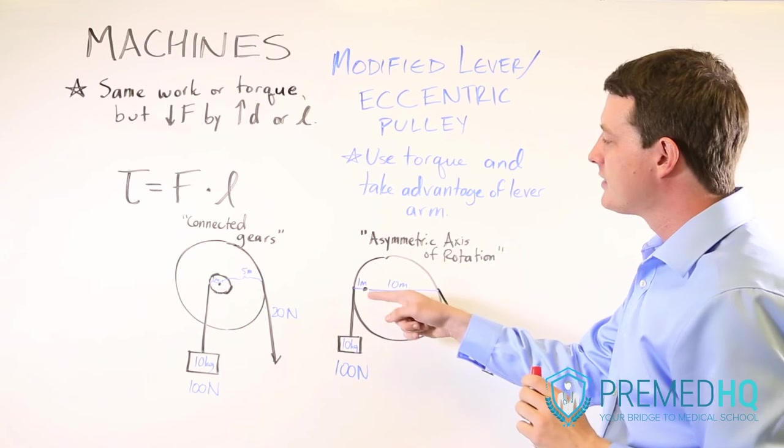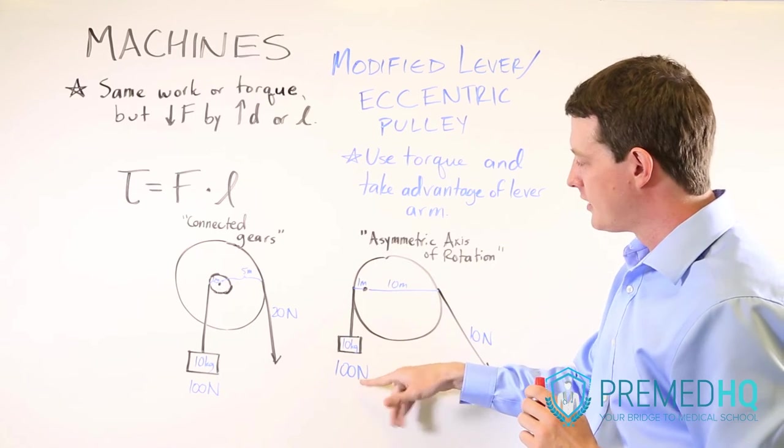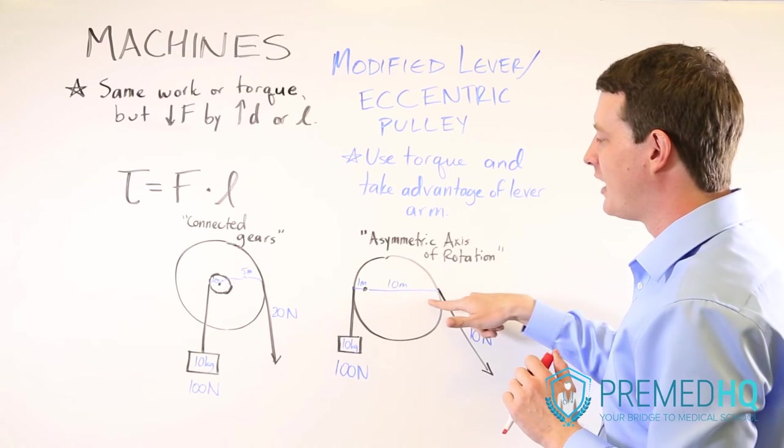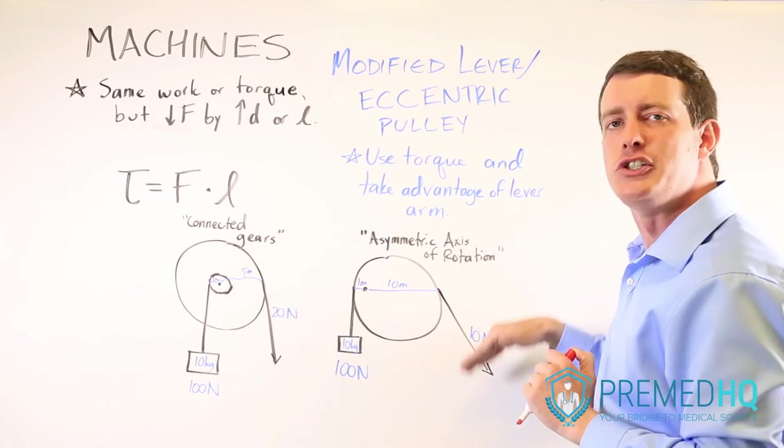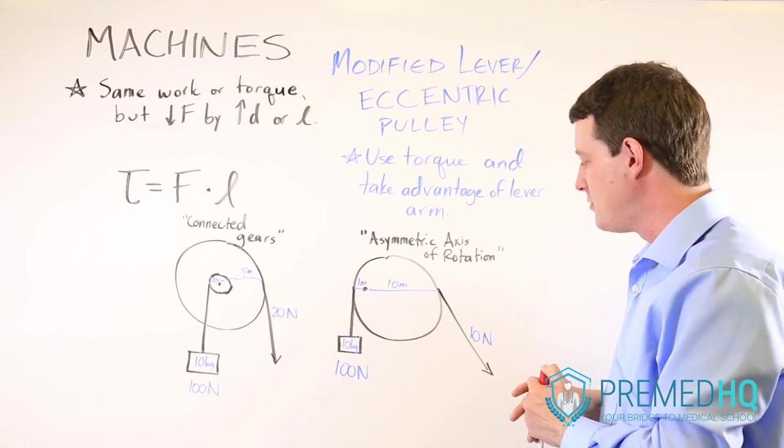And because this has a one meter lever arm and a hundred newton force, you're going to be able to have a much larger lever arm over here, and that will reduce the amount of force necessary to generate the torque to lift this object.